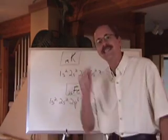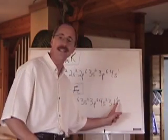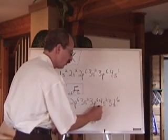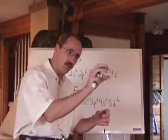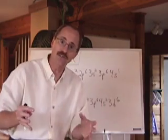Iron is element 26, so here's its electron configuration all the way to 3d6. Now you're going to say, why did you write the 3d after the 4s? Because that's kind of the way it occurs on the periodic table, but you can write it like that, it's okay.